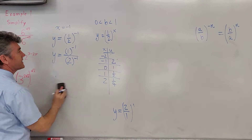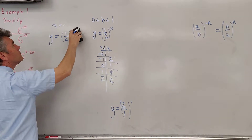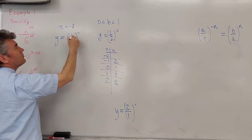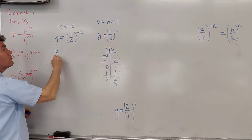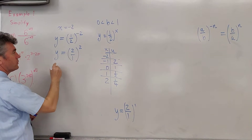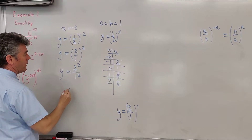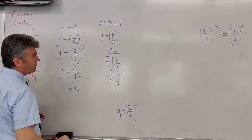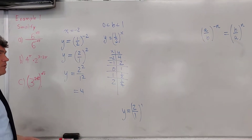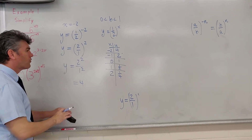Finally, let's see what happens when x is negative two. When x is negative two, we have one-half to the negative two, which is the same as two over one to the positive two, which is the same as two squared over one squared, or just four. Now that we have all those points, we're ready to graph.